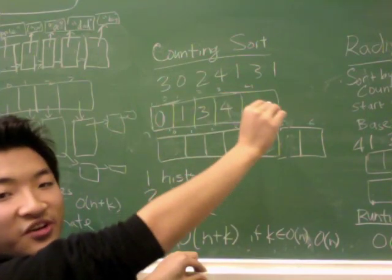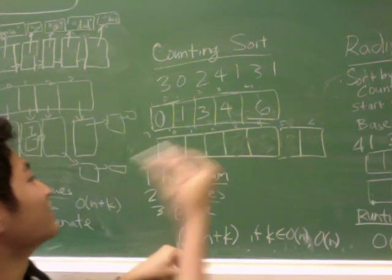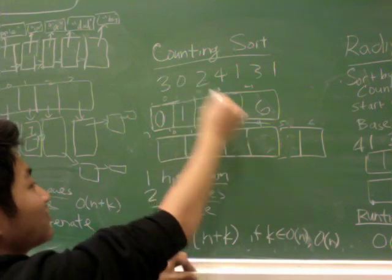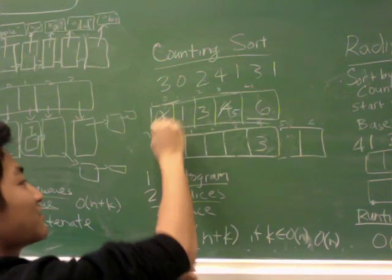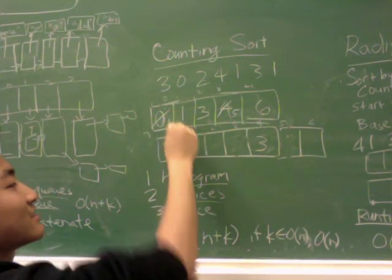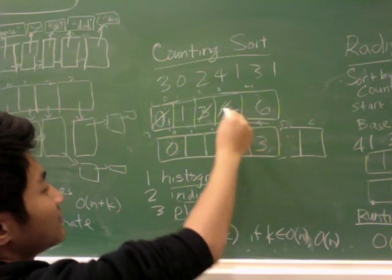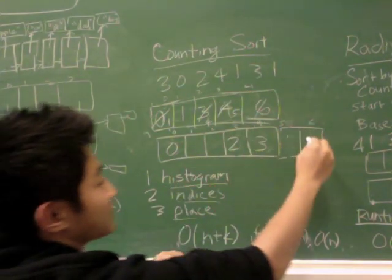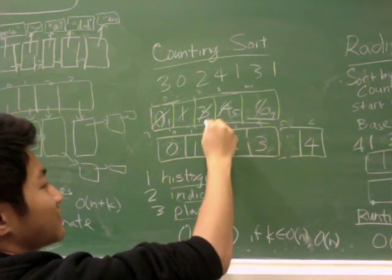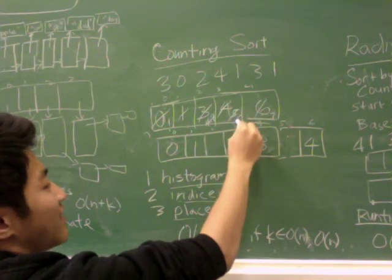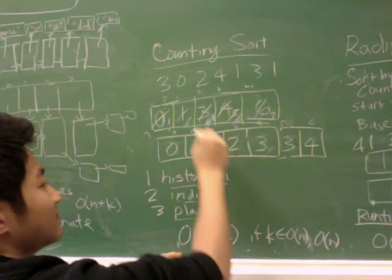Now all we have to do is go through the original input list and place all the elements based on the work we've done already. So we first start with three. Three goes to index four. So after you're done placing this, you want to increment the index. Zero goes to index zero, and you still have to increment this index. It doesn't change. Two goes to index three. And this becomes four. Four goes to index six. And this becomes seven. One goes to index one. Three goes to index five. And one goes to index two.